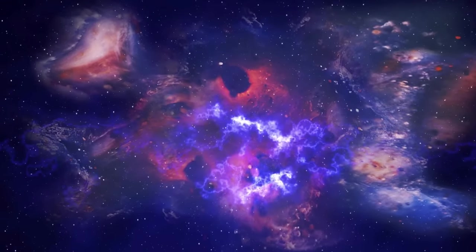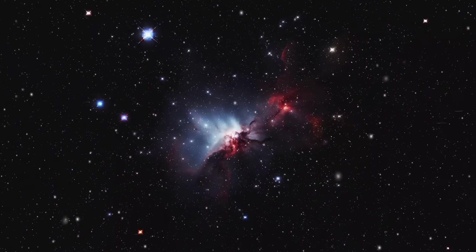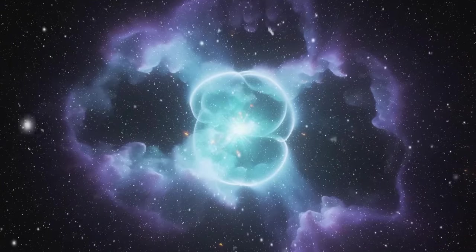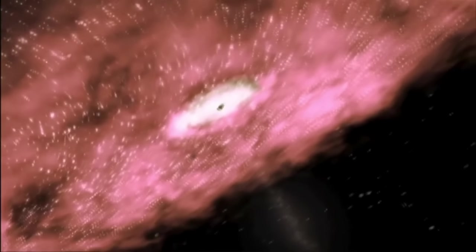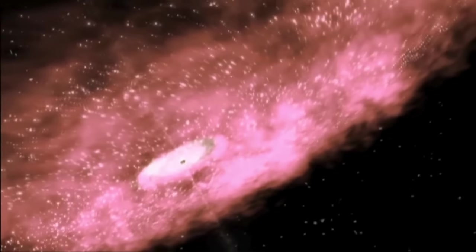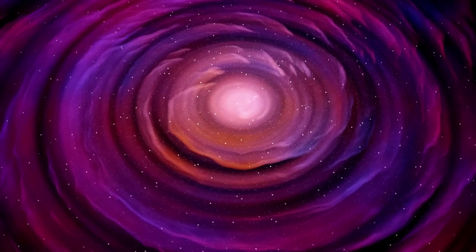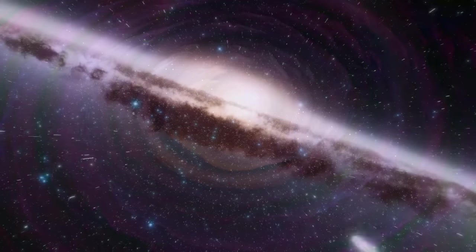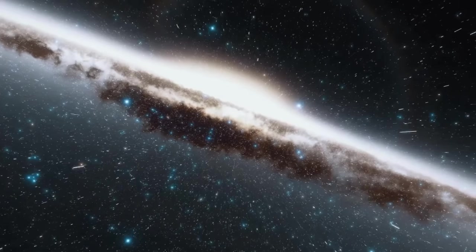The observable universe is pretty massive. When we try to get a handle on its size, we usually talk about the observable universe - basically the part of the universe that we can see from here on Earth. Light travels super fast, like the fastest thing we know of. But even with that speed, light takes time to get from one place to another.